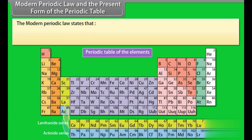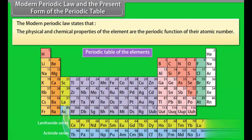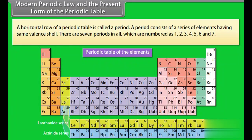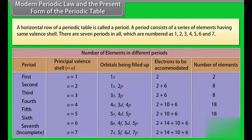Modern Periodic Law and the Present Form of the Periodic Table: The Modern Periodic Law states that the physical and chemical properties of elements are the periodic function of their atomic number. The present form of the periodic table is the long form. A horizontal row of a periodic table is called a period. A period consists of a series of elements having the same valency shell. There are 7 periods in all, numbered 1 through 7.